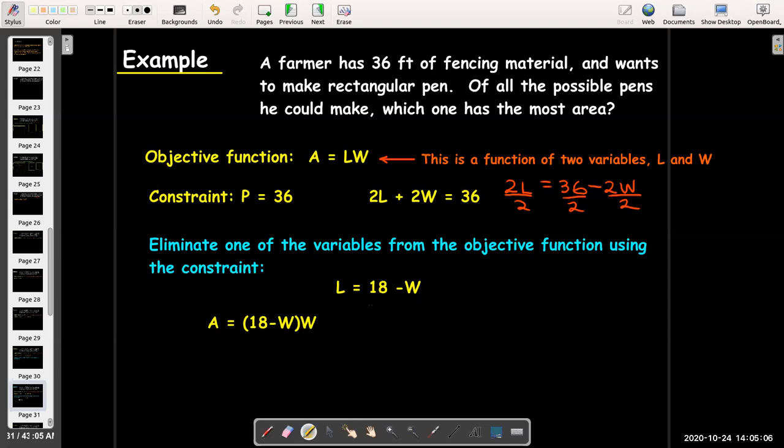And I go ahead and take that 18 minus W, put it in the place of L in my area function. And now I get the area is 18 minus W times W. Or area as a function of W only is 18W minus W squared.